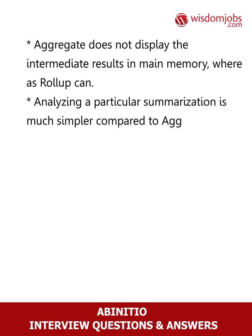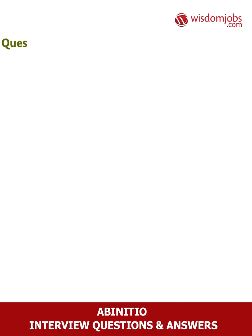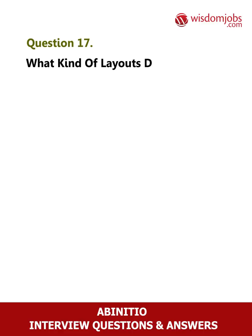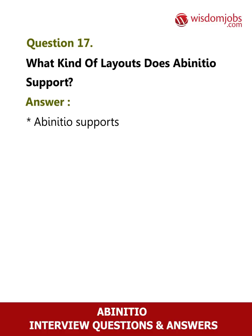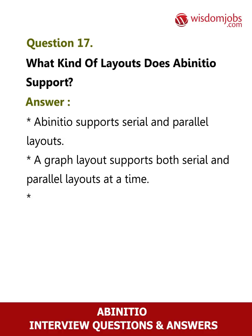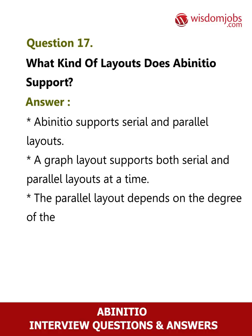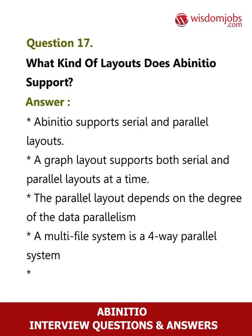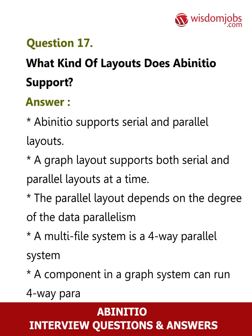Analyzing a particular summarization is much simpler compared to aggregations. Question 17: What kind of layouts does Ab Initio support? Answer: Ab Initio supports serial and parallel layouts. A graph layout supports both serial and parallel layouts at a time. The parallel layout depends on the degree of data parallelism. A multifile system is a four-way parallel system, and a component in a graph system can run four-way parallel.